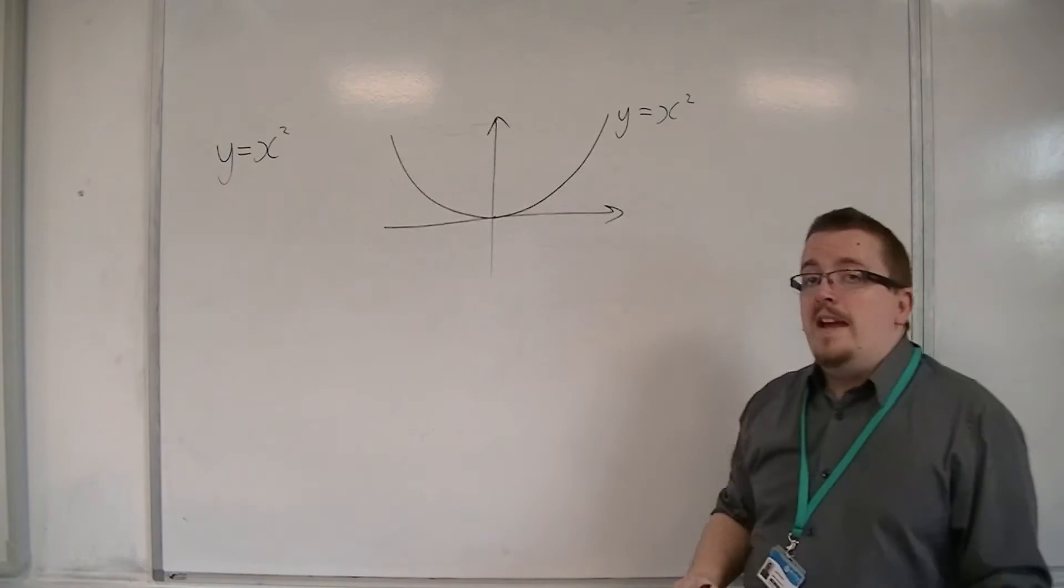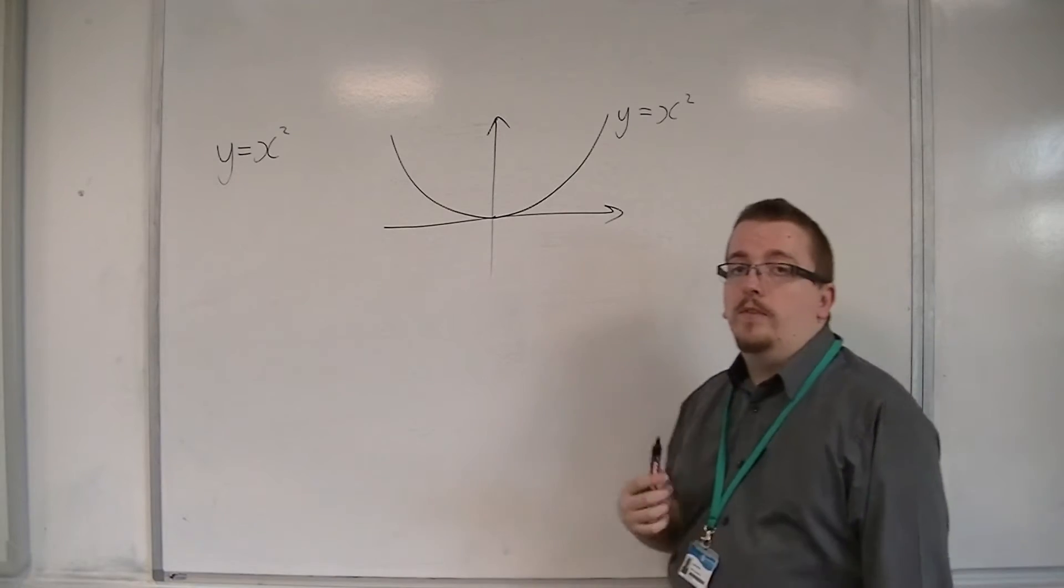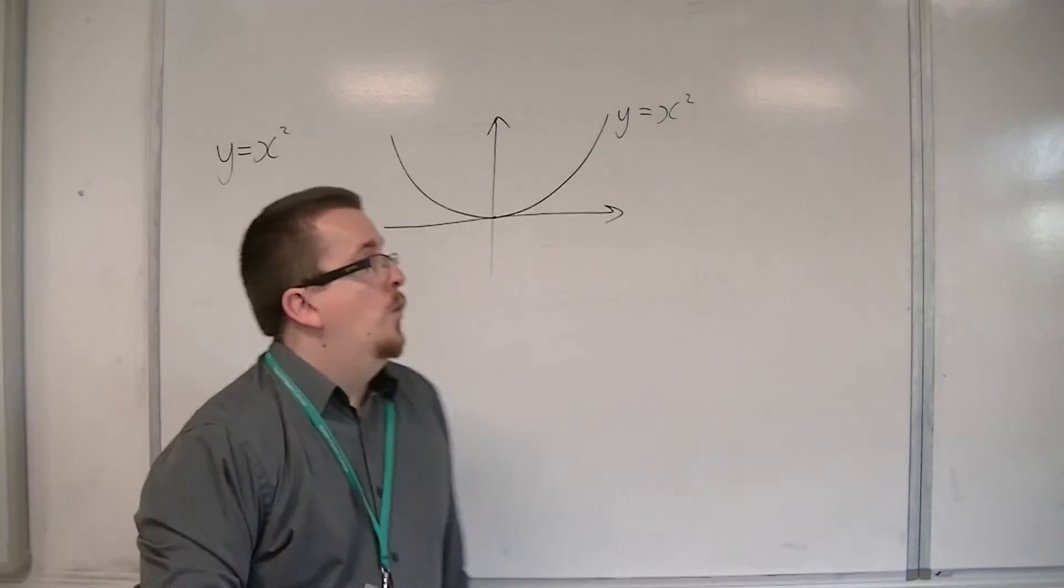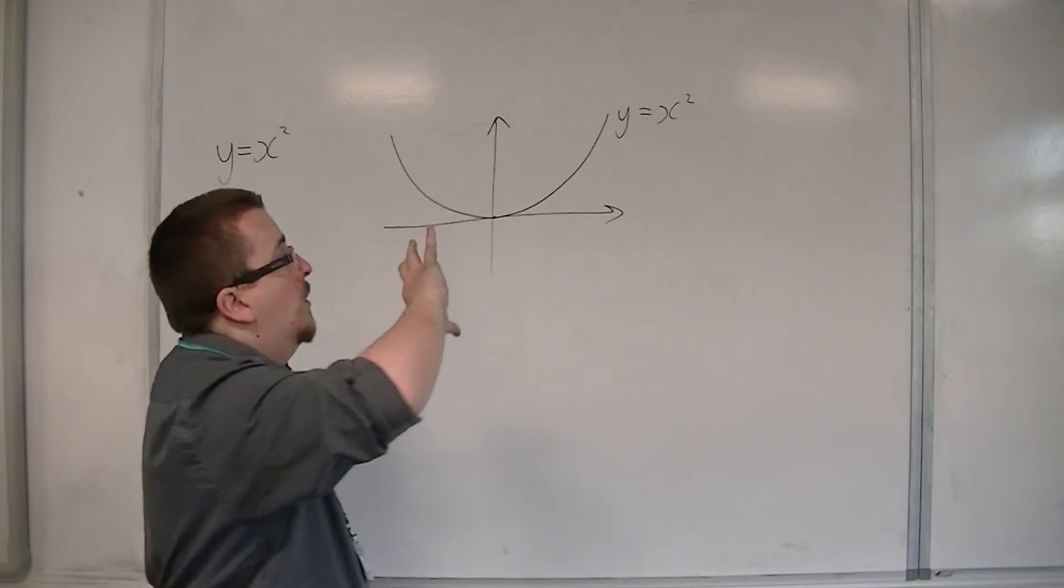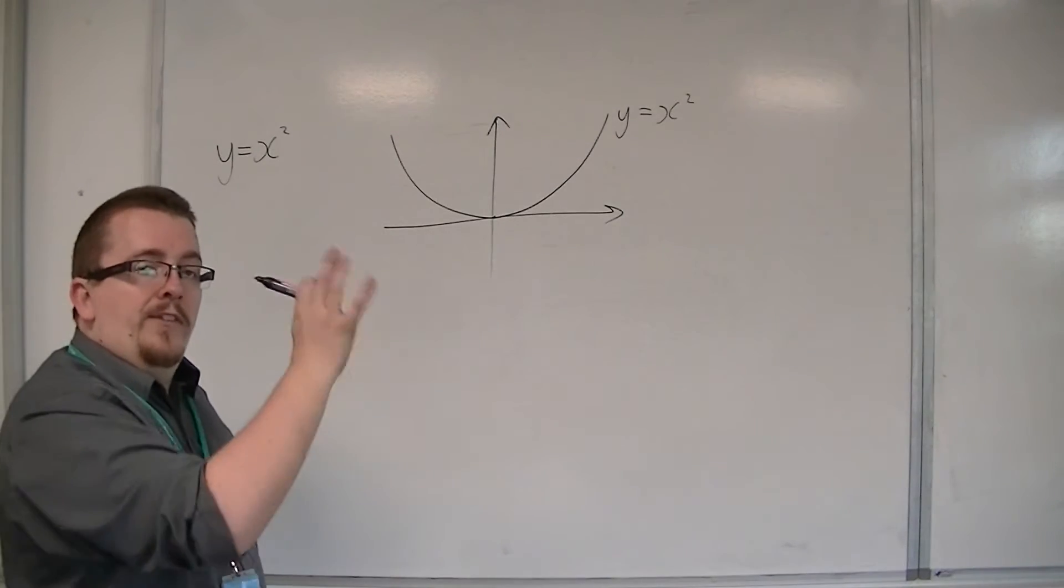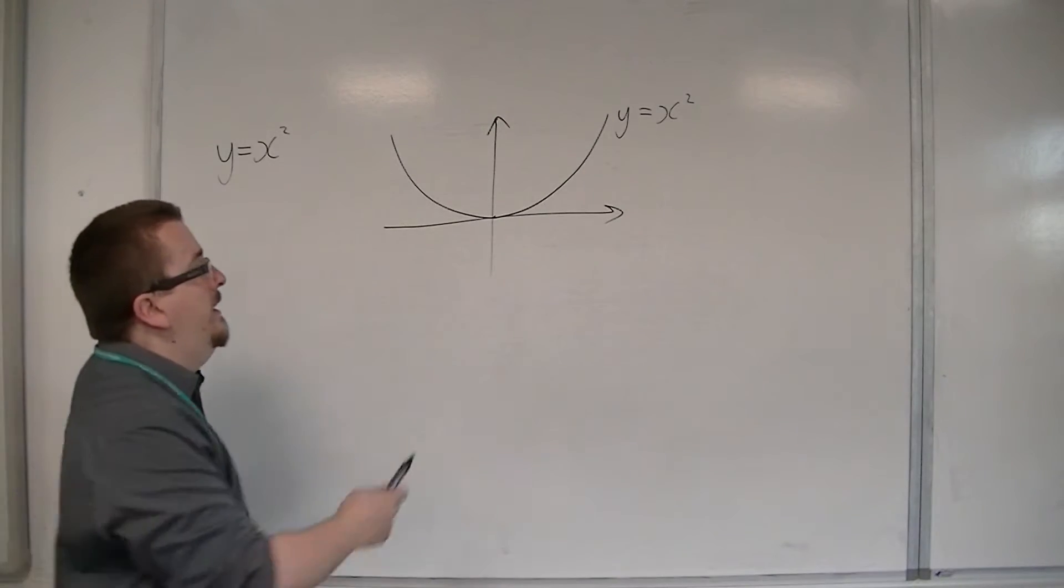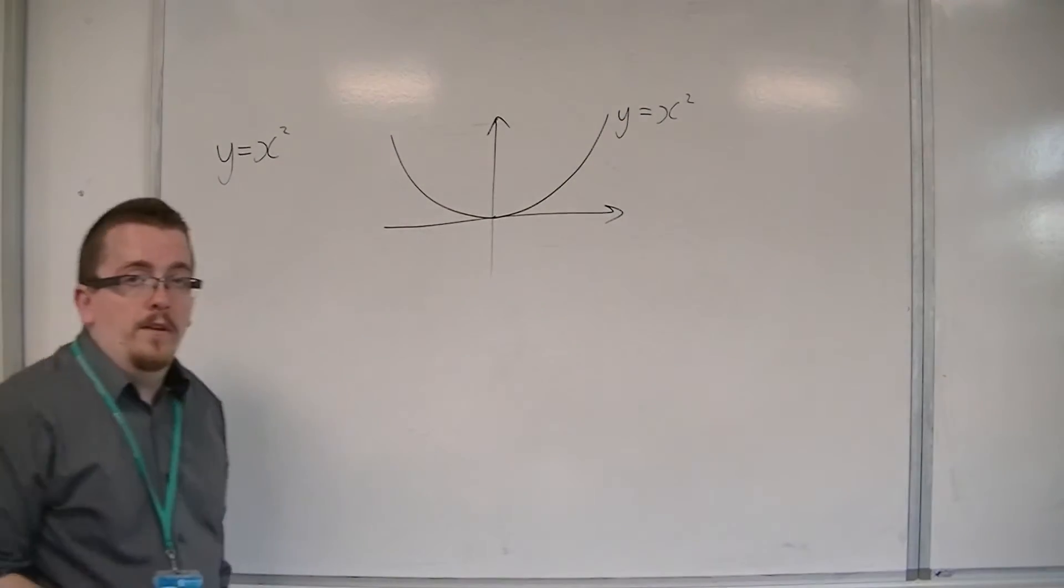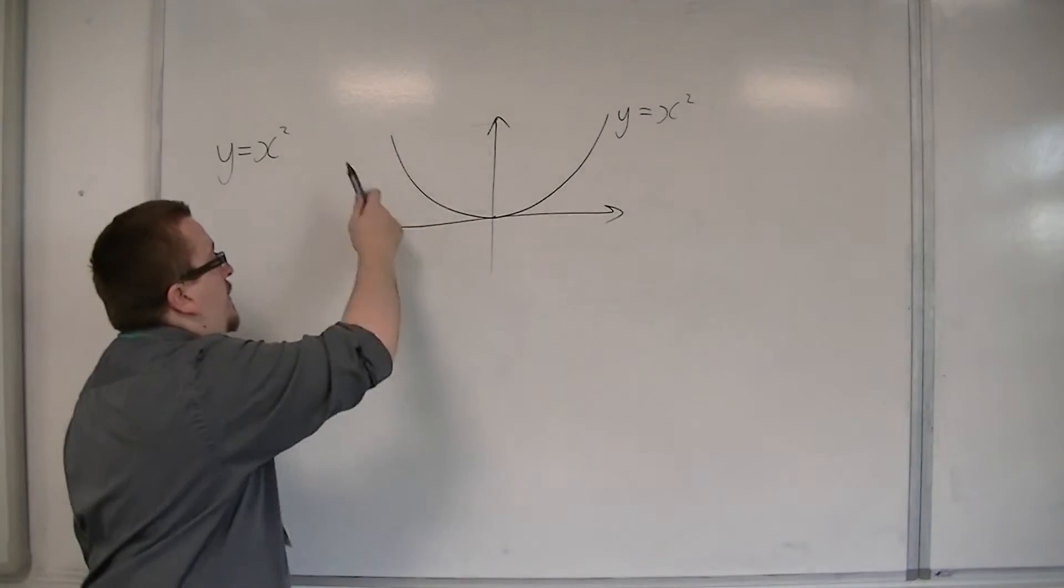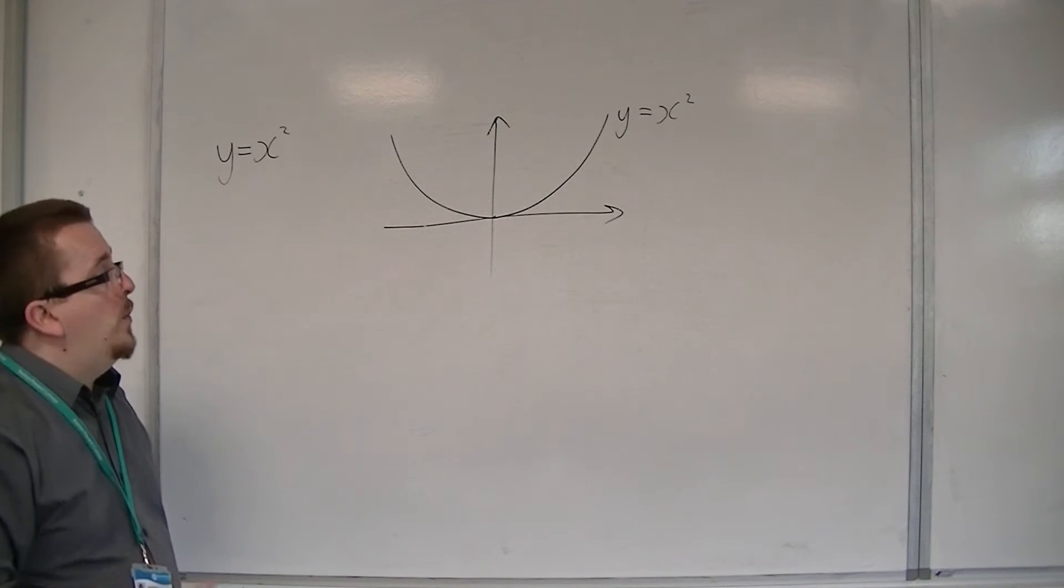As x is increasing—1, 2, 3, 4, 5, 6, 7 and so on—y is increasing by the square of it. So, 1, 4, 9, 16, 25, 36, etc. It gets steeper and steeper as we go on, and it goes in either direction. So this is what y equals x squared looks like.